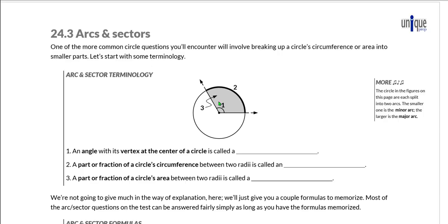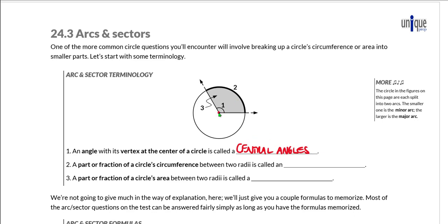In our next section we need to discuss arcs and sectors. Arcs and sectors are relatively common types of circle questions on this test. Before we get into the formulas and how to actually attack these questions, let's make sure we are all clear on some terminology. First, let's talk about angles with their vertices at the center of a circle — we call those central angles.